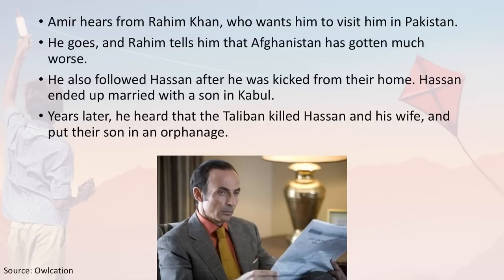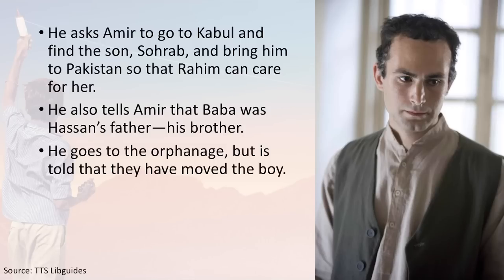Amir then hears from Rahim Khan, who wants him to visit in Pakistan. He goes, and Rahim tells him that Afghanistan has gotten much worse. He also followed Hassan after he was kicked from their home — Hassan ended up married with a son in Kabul. Years later, the Taliban killed Hassan and his wife and put their son in an orphanage. Rahim asks Amir to go to Kabul, find the son Sohrab, and bring him to Pakistan. He also reveals that Baba was Hassan's father — making Hassan Amir's half-brother. Amir goes to the orphanage but is told the boy has been moved.